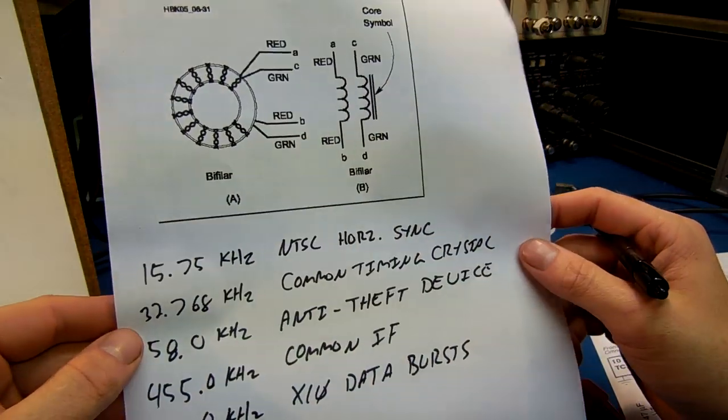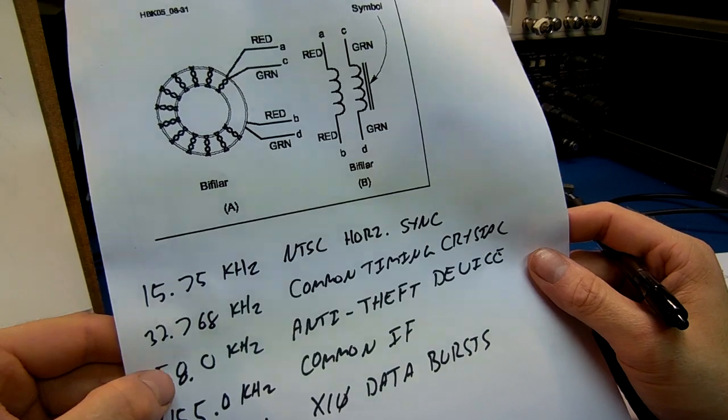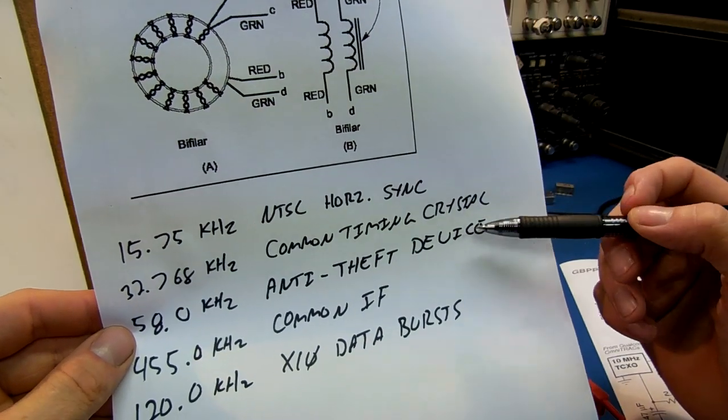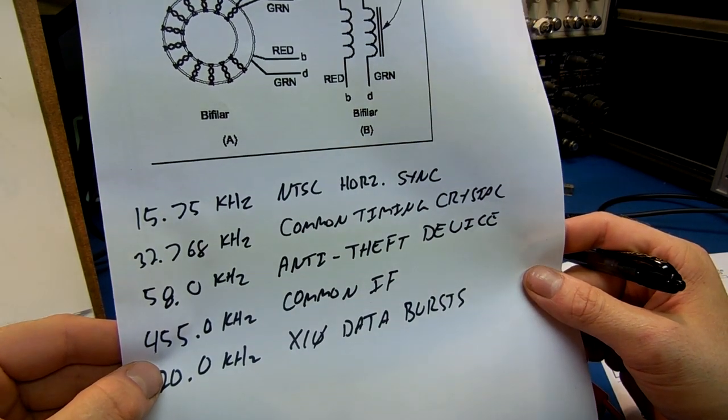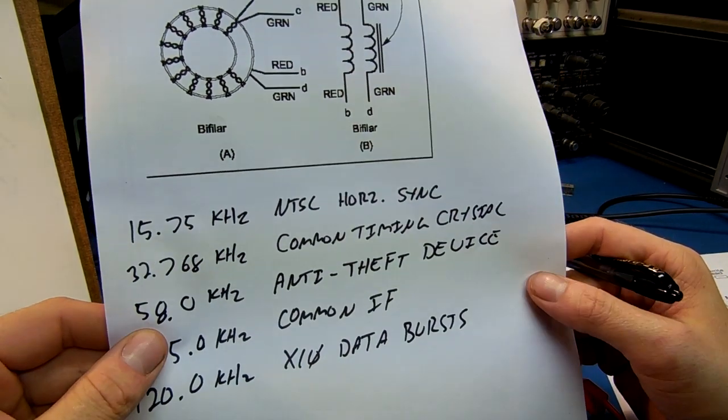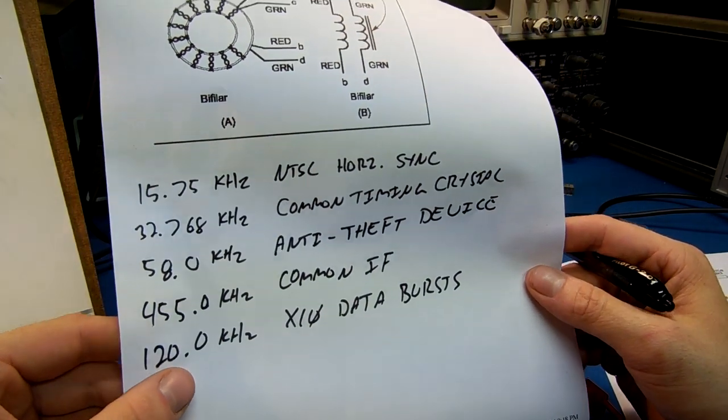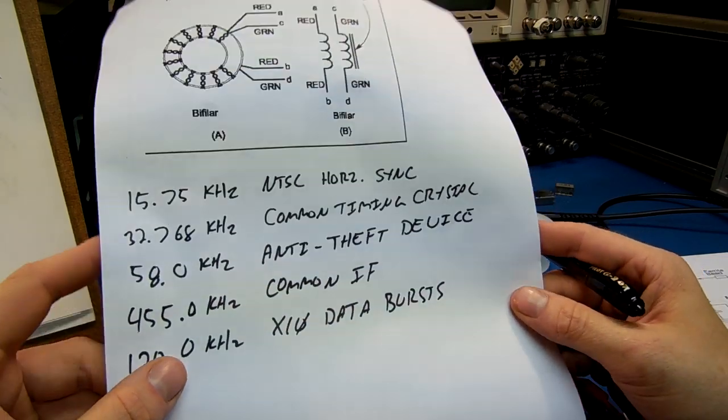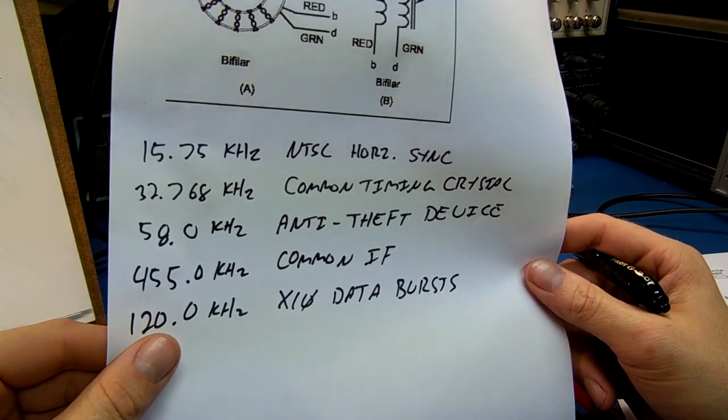Here's also some common low frequency stuff you can experiment with. 15.75 kilohertz is the NTSC horizontal sync frequency of your TV, analog TV. 32.768 kilohertz is a common timing crystal, like in your watch. 58 kilohertz is those anti-theft devices at, like on the, near the doors by stores. Those little two things you have to walk through. They tend to operate, the older ones now I believe, at 58 kilohertz. 455 kilohertz is a common IF output frequency of, you know, like an AM or FM radio. And 120 kilohertz is around those X10 data bursts on your AC phone line, 120 volt power lines.